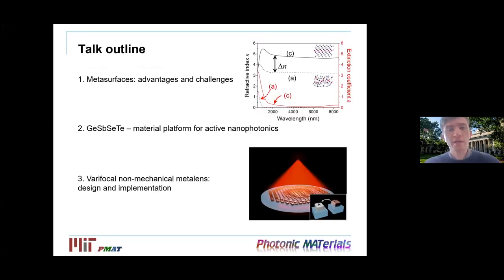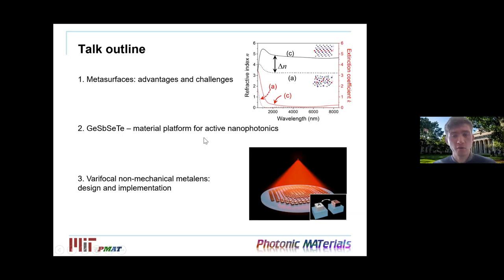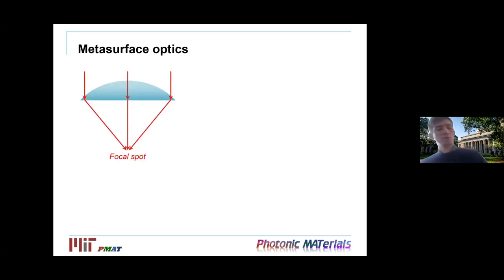Today's talk is broken into three parts. The first is an introduction to metasurfaces — how they work, their key advantages, and main challenges. The second introduces the material platform based on chalcogenide glasses, specifically a newly developed germanium antimony selenium telluride alloy, and how it can be applied for active nanophotonics. The third part demonstrates a varifocal, non-mechanically actuated metalens.